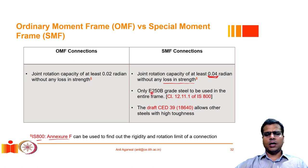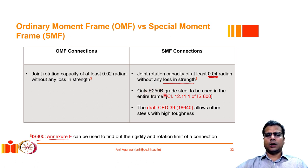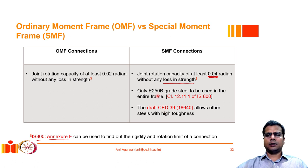IS 800 specifies that only E250B grade steel can be used in a special moment frame, since a larger level of ductility is required and we want frame members to behave as deformation-controlled members without very high over-strength. However, in the revised code there is an allowance to use higher grade steel such as E350, provided a high toughness requirement is still met — the strength can be higher but toughness is not relaxed.